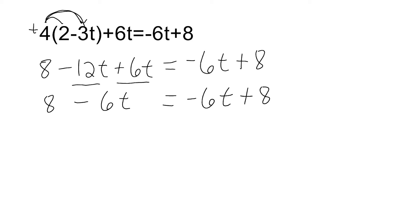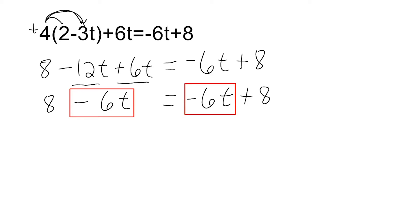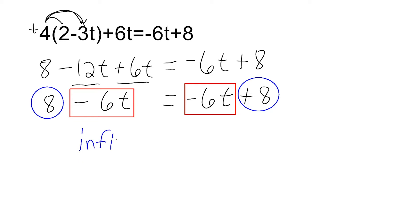What we should notice at this point is that if you look at the term with the coefficient on the left, it is identical to the one on the right. And if you look at the constants on either side, they are also identical to each other. When that situation arises, you would say that you have an infinite amount of solutions.